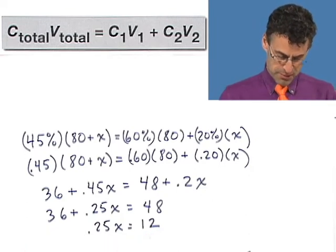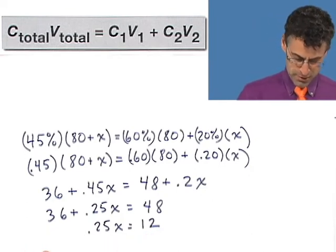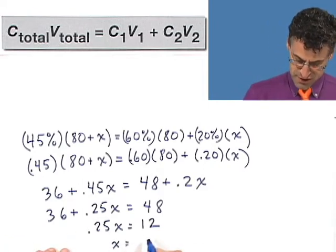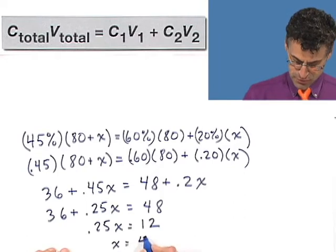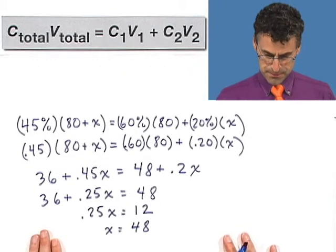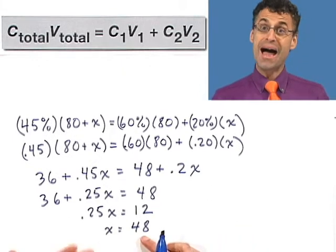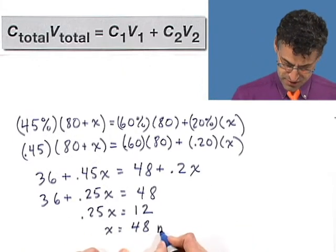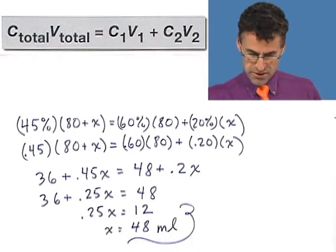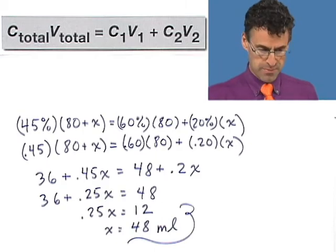And so this is a quarter x equals 12. So if I multiply both sides by 4, or you can imagine dividing both sides by .25, we see that x equals 12 times 4, which is 48. And what does x represent? X represents the amount, the volume, so that's milliliters. So the answer is we have to add 48 milliliters of the 20% solution to get us to where we want to be.